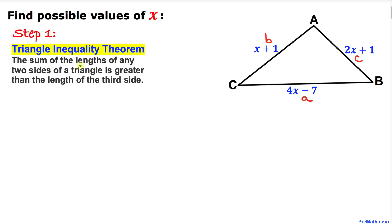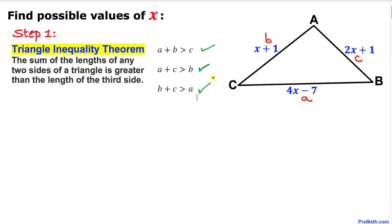Here is our triangle inequality theorem: the sum of the lengths of any two sides of a triangle is always greater than the length of the third side. In other words, a plus b must be greater than c; likewise, a plus c must be greater than b; and b plus c must be greater than a.